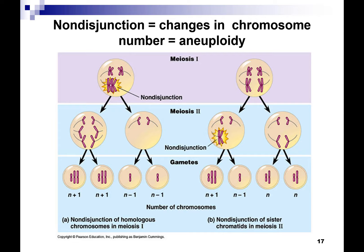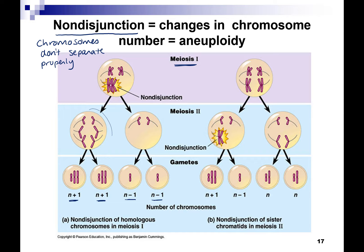Sometimes things don't go as perfectly as we would want. One more concept: non-disjunction. Non-disjunction means your chromosomes don't separate properly. We're mostly interested in non-disjunction in gamete production because this affects the next generation. You can have non-disjunction in meiosis one — where somehow the spindle fiber didn't connect — and you get too many chromosomes during your first cell division, leaving you with gametes with extra or a loss of chromosomes.